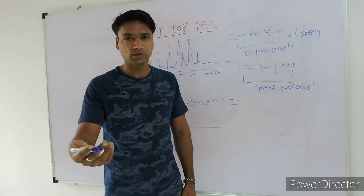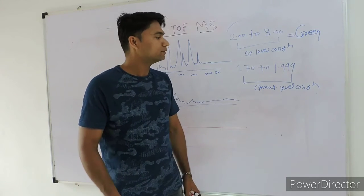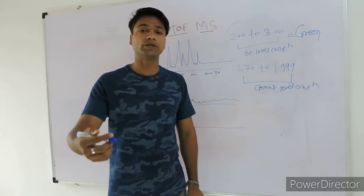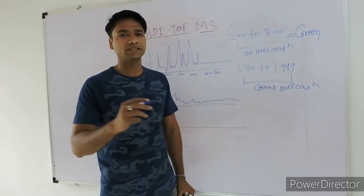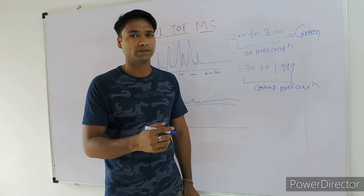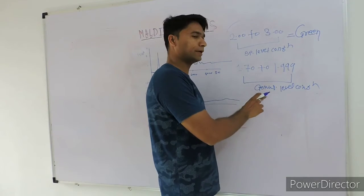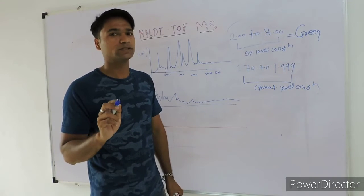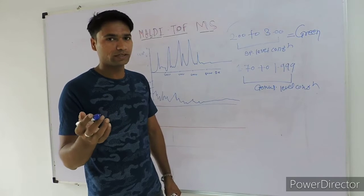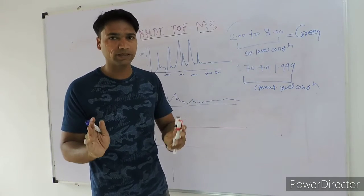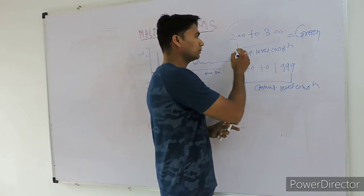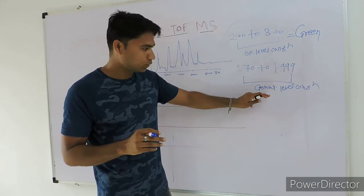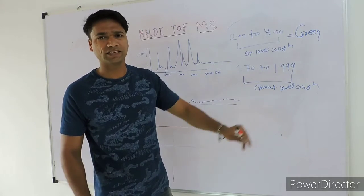Even though we get the identification at the genus level — you call the score value in this range — but still you get the species name. However, the species is not confirmed by MALDI-TOF MS; it is probably giving the maximum hit. So when you have genus-level information, you have a species name, but you can rely on the results at the genus level, because the rule is that if your identification is in this range, you will get genus-level identification. If your identification score is more than 2, then you will be green.